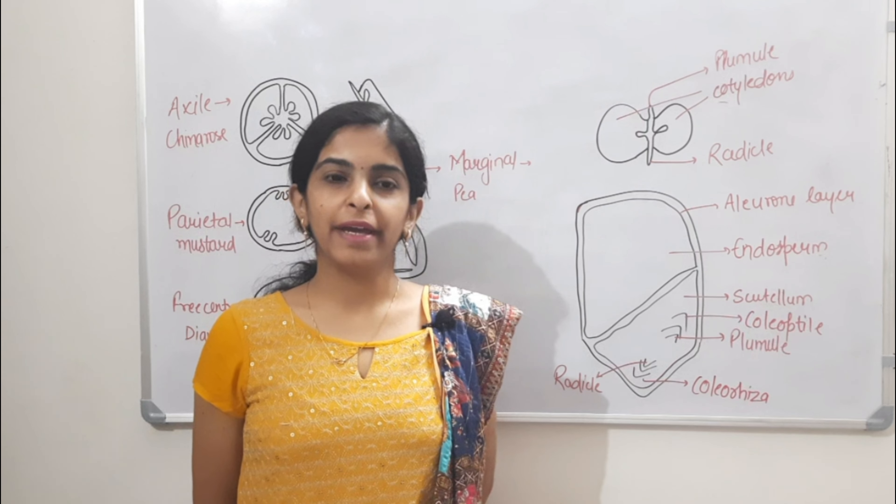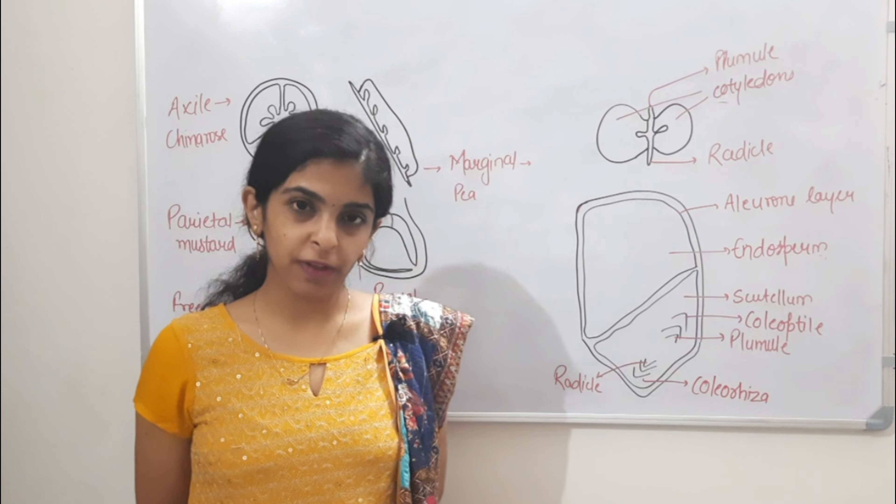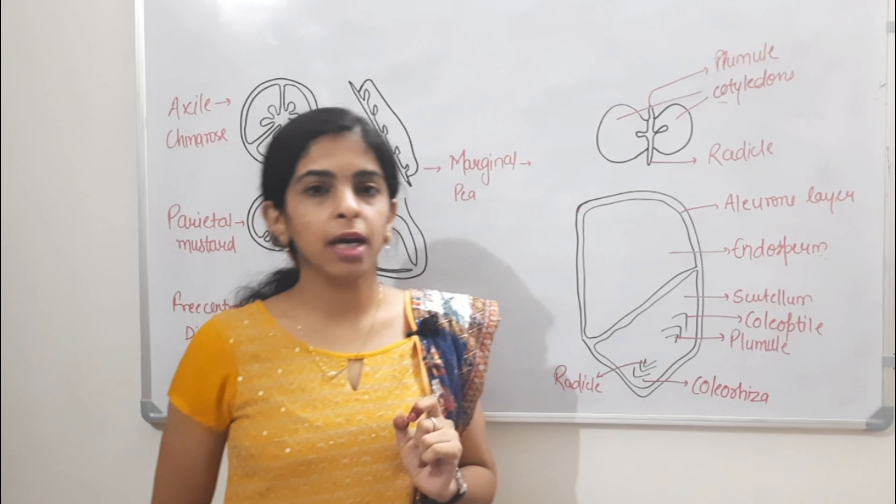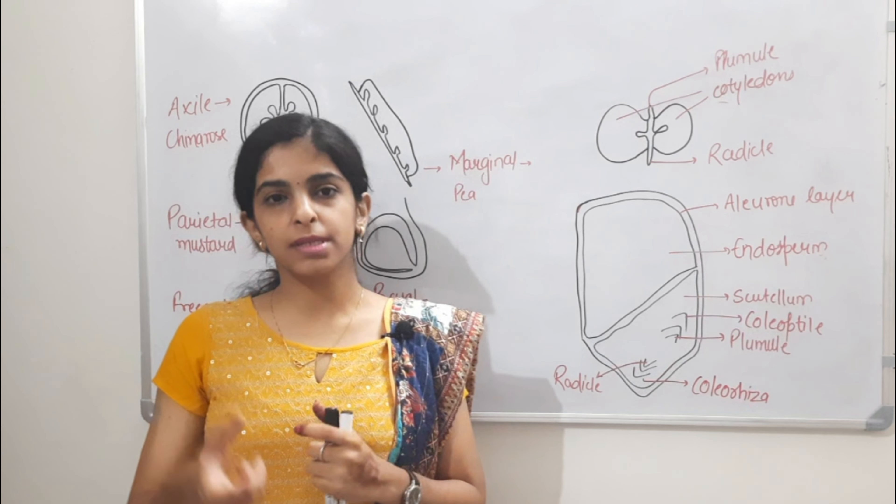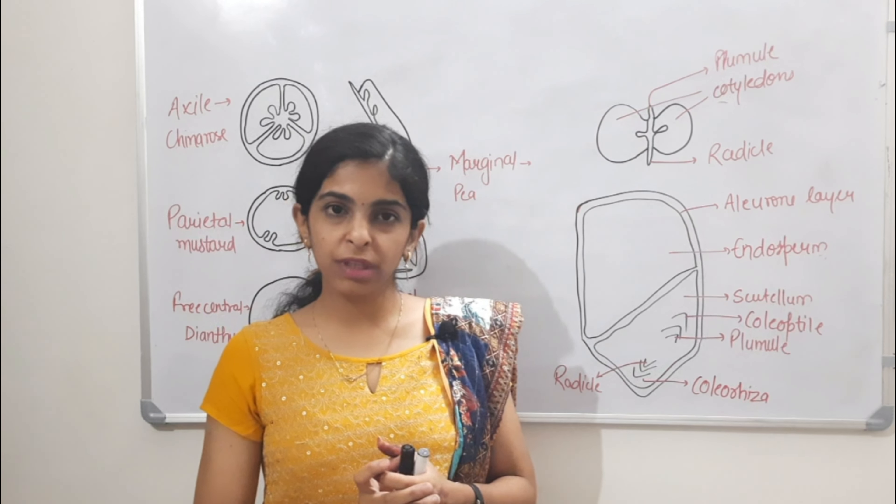Hi everyone, welcome to Class 11th biology. We have done morphology of flowering plants. There we covered androecium. Now we come to gynosium. Gynosium is the ovary - we call gynosium the combination of ovary, stigma, and style. So here we have the female part of the flower.